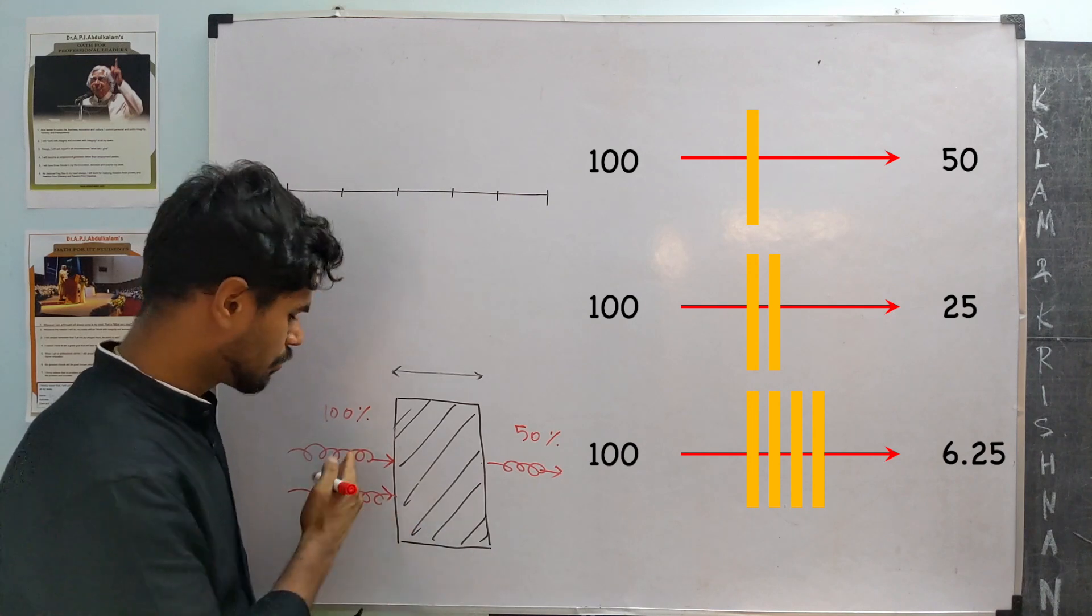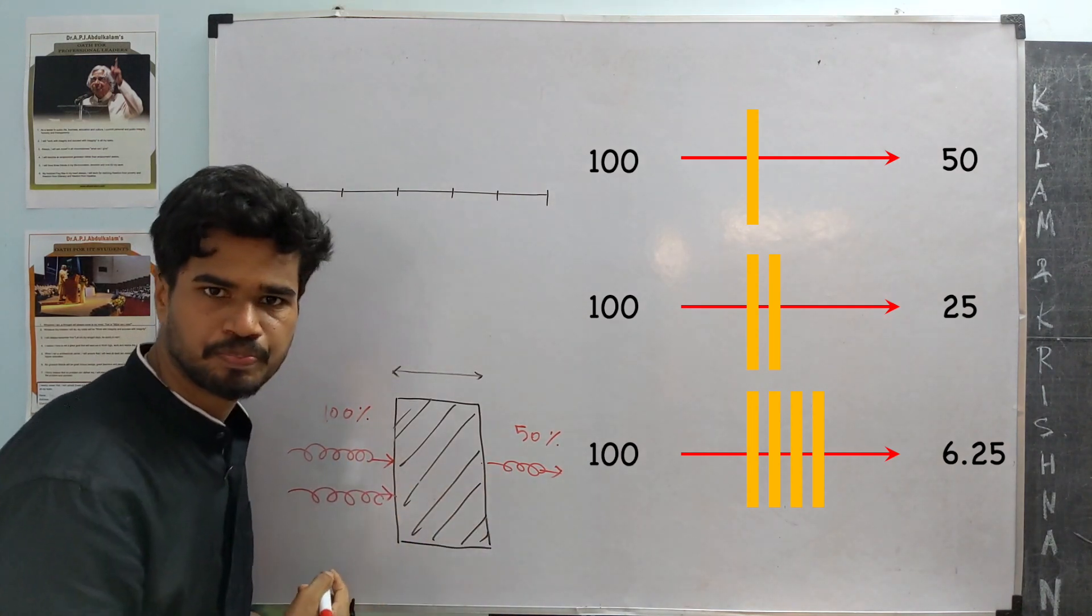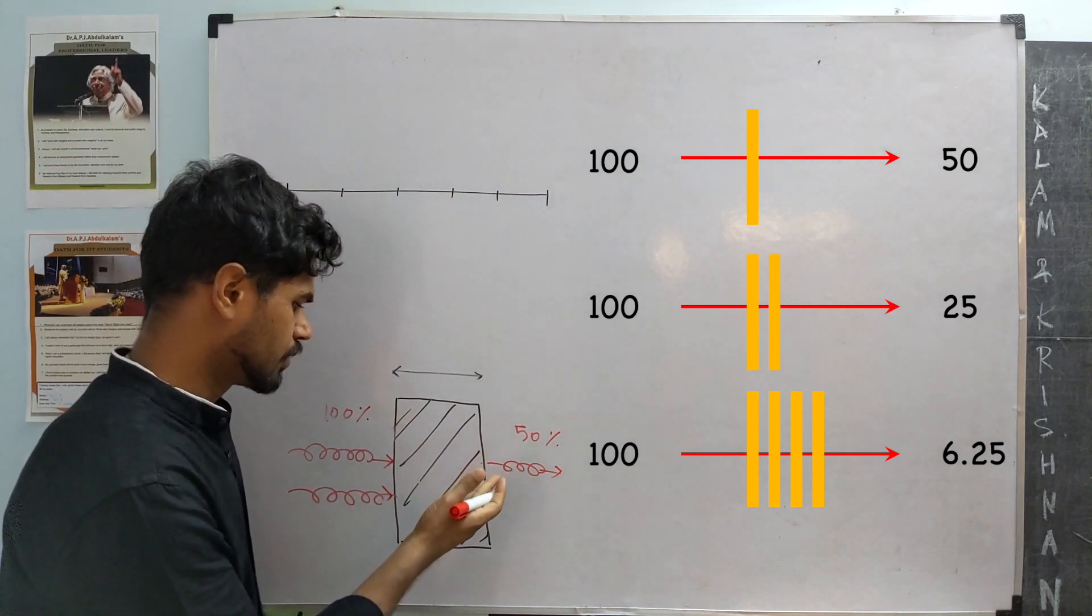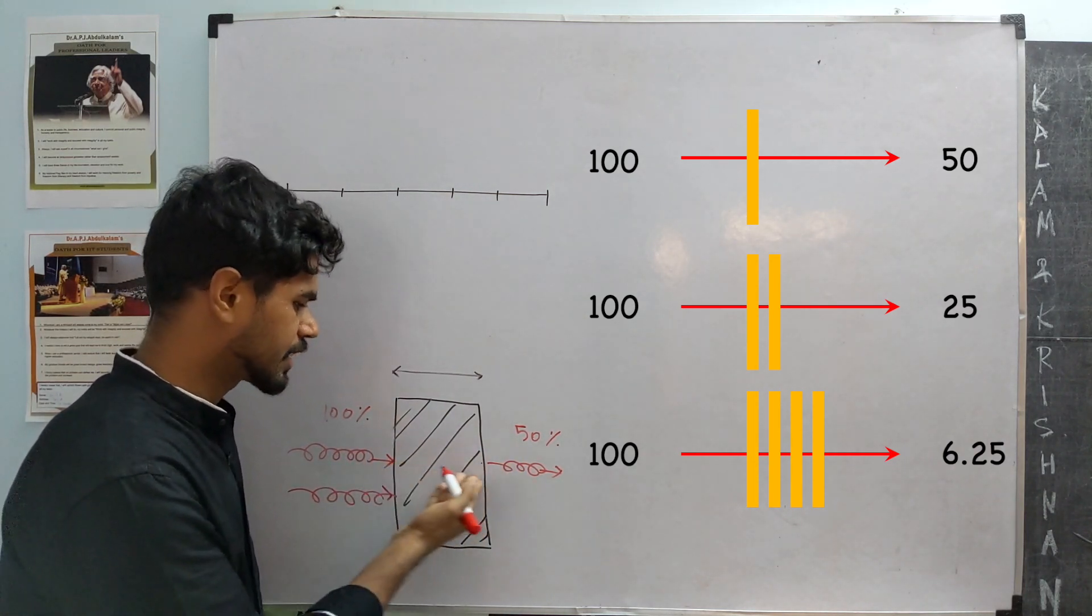That is, the number of photons would have dropped as they pass through this. So, there is always attenuation of light as they interact with matter.